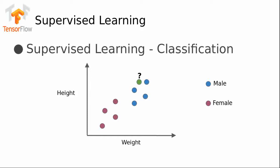We know the features — height and weight — of this green person, but we are not told whether that person is male or female. This particular data point needs to be mapped to its respective class. Our machine learning algorithm will predict, based on what it has been trained on, what class it should belong to. In this case, we can pretty well see that it is a male.